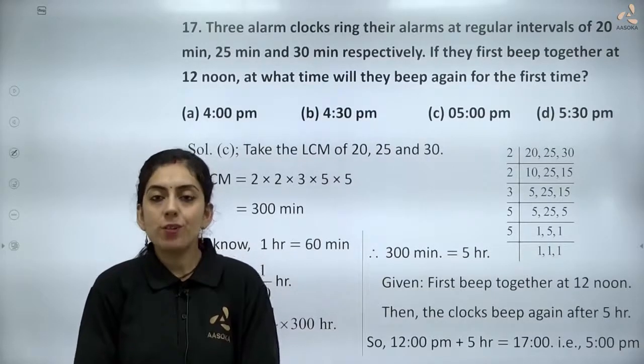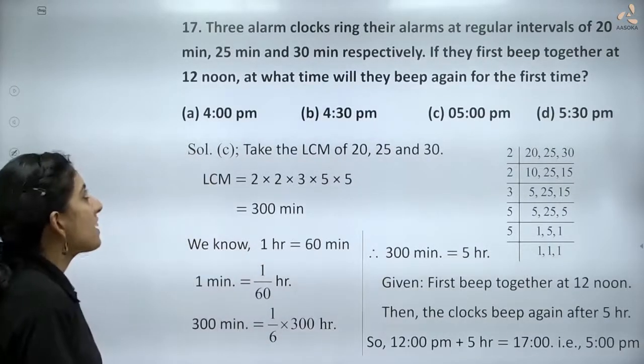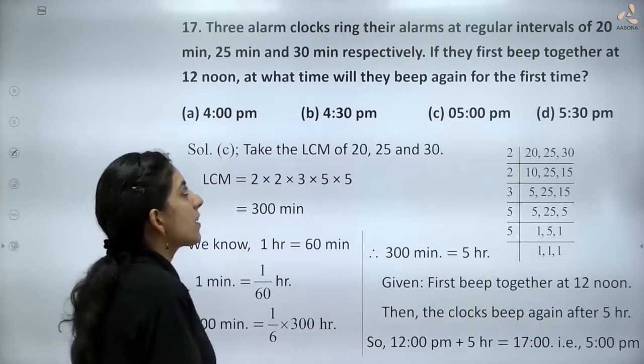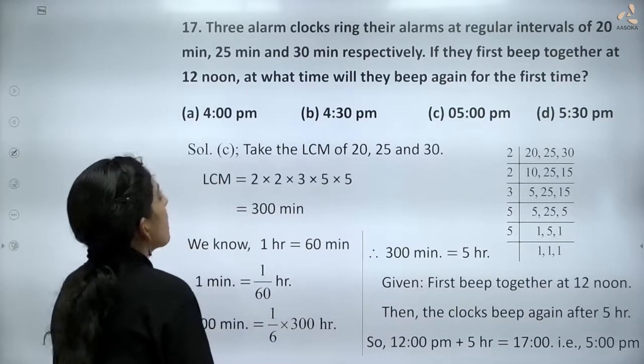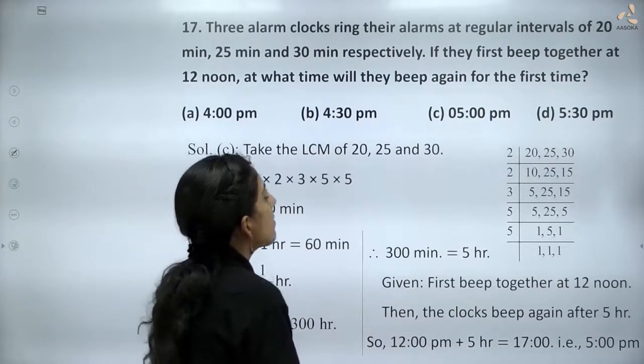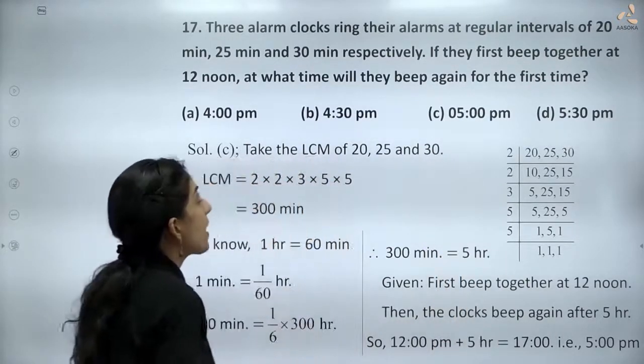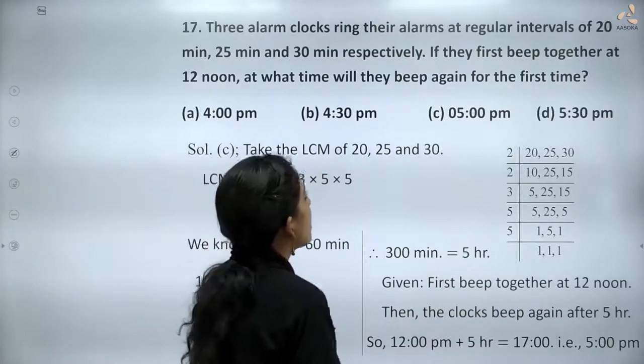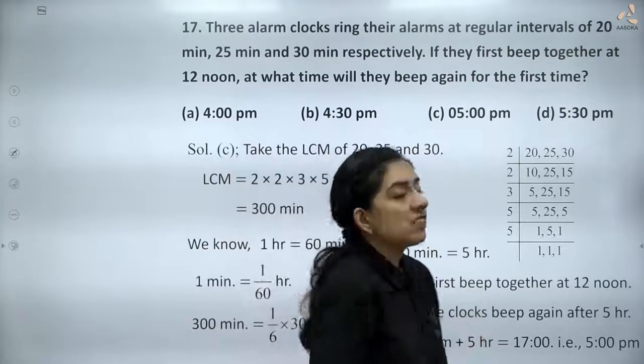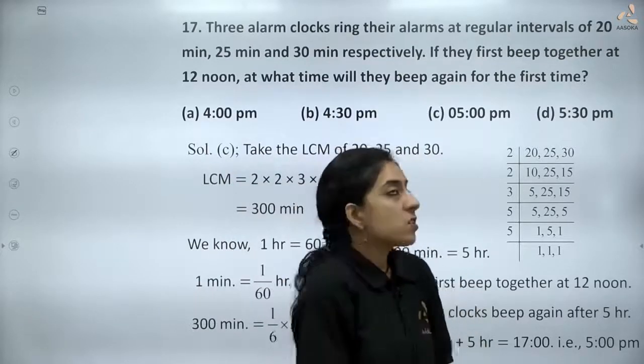Let us move on to question 17. Three alarm clocks ring their alarms at regular intervals of 20 minutes, 25 minutes, and 30 minutes respectively. If they first beep together at 12 noon, what will be the time when they beep again for the first time?